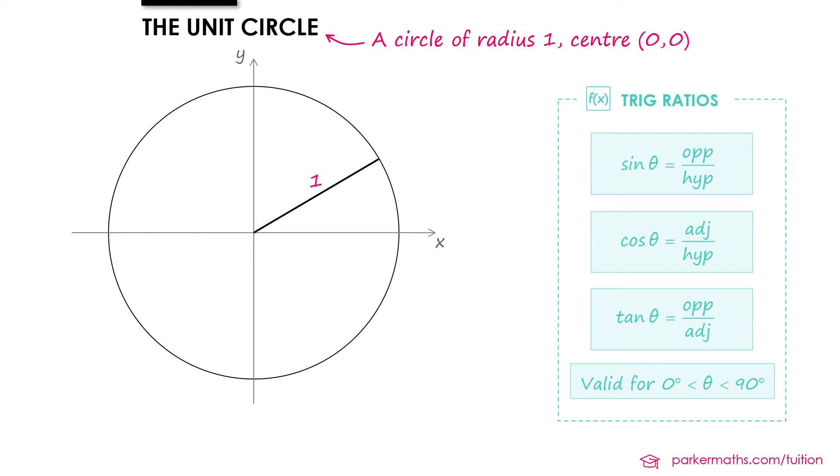I'm going to mark an angle θ onto this unit circle which takes me from the positive X direction to the radius that I've drawn. And the convention when we're working with the unit circle and in many other areas of maths is that we measure angles anticlockwise from the positive X direction.